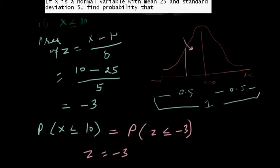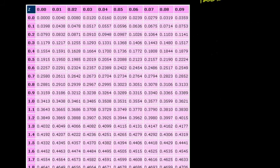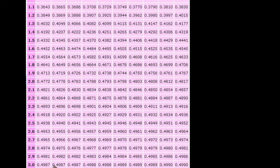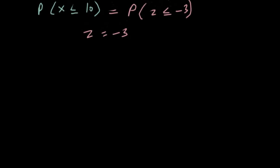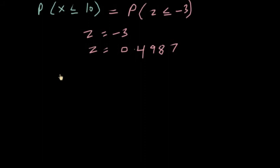We look at the Z-table. From the table we find that the area corresponding to Z equal to 3 is 0.4987. So the table value for Z equal to 3 is 0.4987. Now we will use this to find the probability of Z less than minus 3.